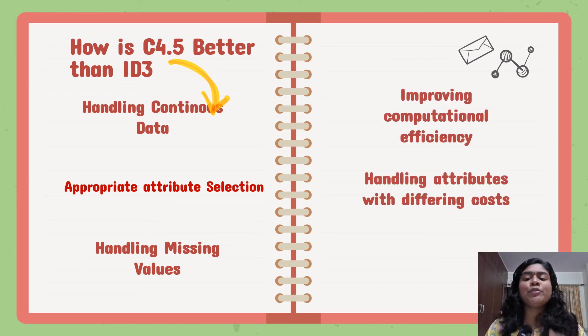Next, it improves computational efficiency. So your computational efficiency improves like anything. Your time efficiency also improves. And you have handling attributes with differing costs. Like I said with the example of blood pressure, heartbeat and sugar levels, these are all measured in different units. Now when we are using normalized information gain, you do not have to worry about the different units.